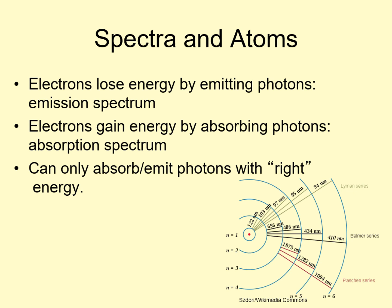This is how an absorption spectrum is produced. Lots of different photons go through the gas, but only ones with the right energy get absorbed. Those are the dark lines in the spectrum. Similarly, an electron dropping down to a lower level can only produce photons with energies that match that energy gap. This produces an emission spectrum — the pattern of bright lines matches the energies of the photons coming from the gaps.